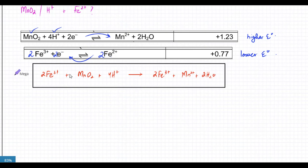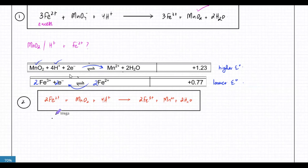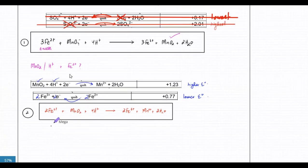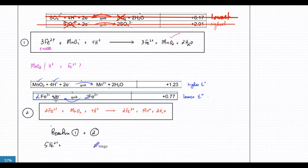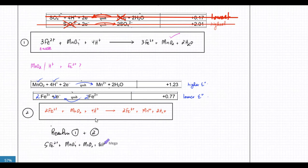The overall reaction is obtained by adding reaction one and reaction two together. Adding up the reactants gives 5Fe²⁺ plus MnO₄⁻ plus MnO₂ plus 8H⁺. Now I'll check whether Mn²⁺ would get reduced further by comparing its potential: Mn²⁺ is at minus 0.18 volts, which compared to the Fe²⁺ equation at 0.77V makes Mn²⁺ the lower potential, meaning it loses electrons - and we don't have Mn(solid), so that reaction is not possible.